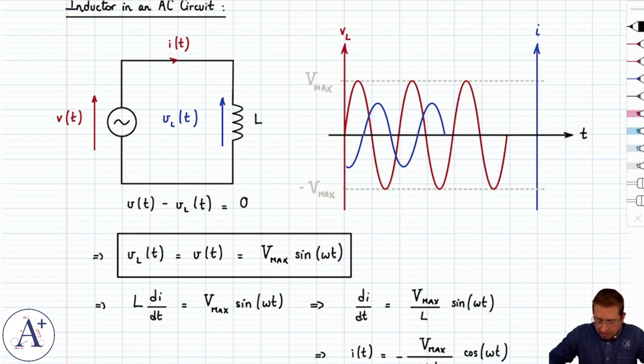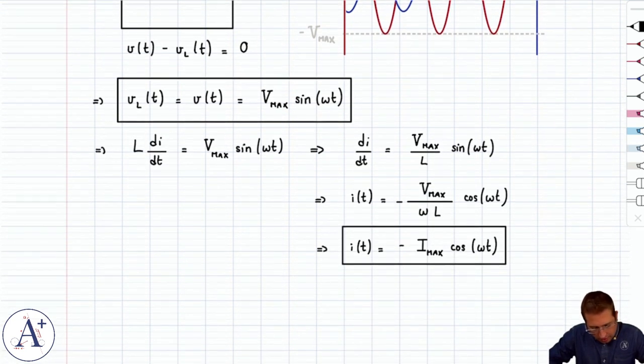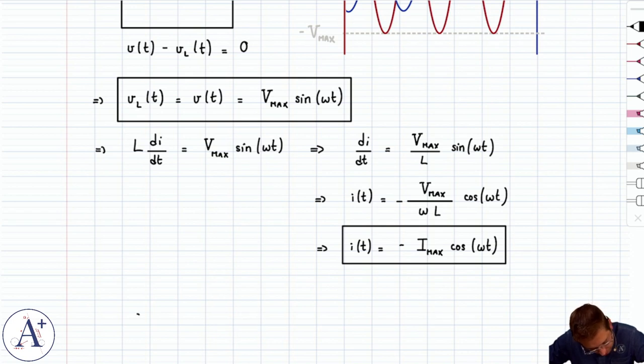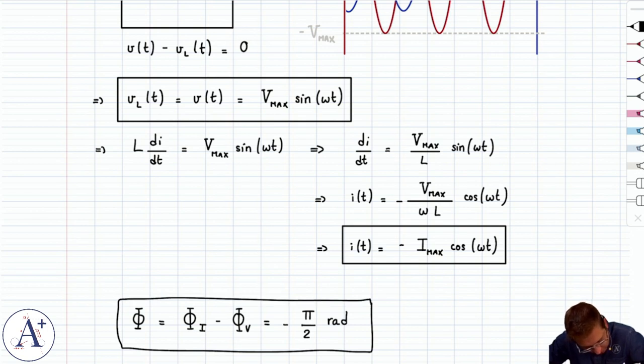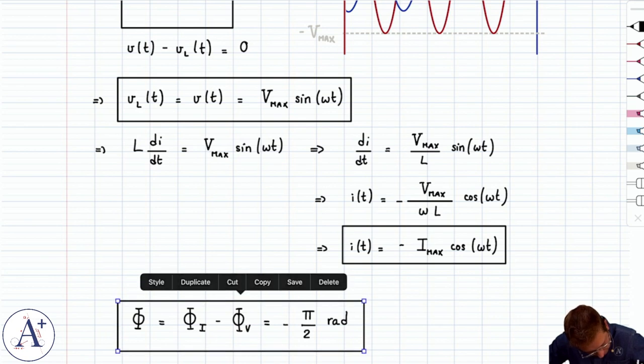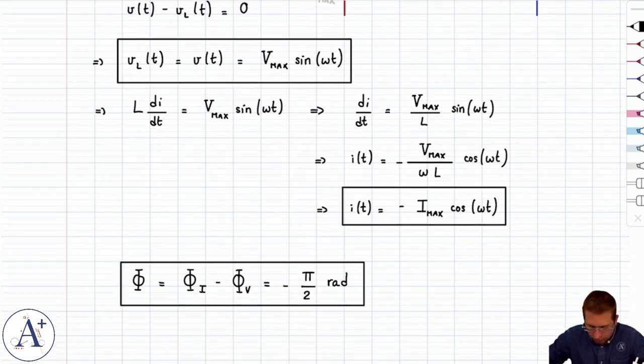So we have that the voltage is going to lead the current in our phase difference φ, which is φ_i minus φ_v is going to be minus the quarter of a period, π over 2 radians. And the minus comes from the fact that the voltage leads the current.